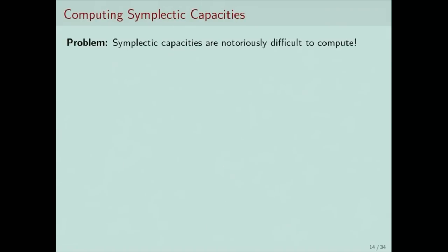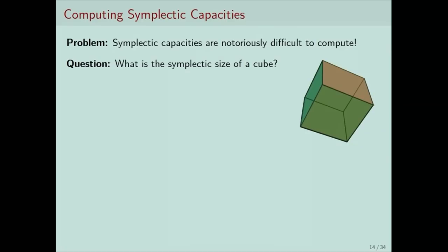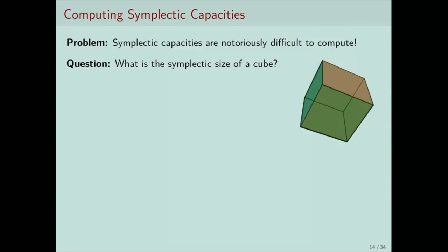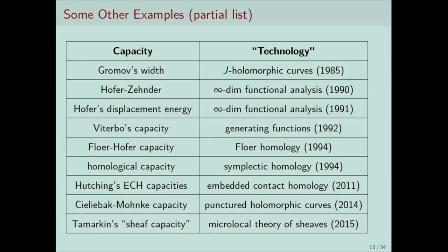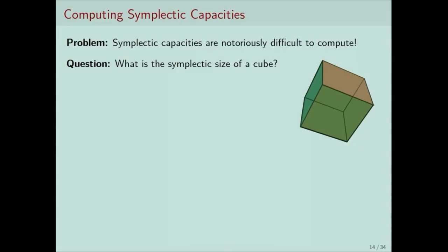We don't know how to compute these capacities. So let me pose a provocative question: what is the symplectic size of a cube? Choose one of these capacities — the Hofer-Zehnder capacity, the Gromov width, whatever your favorite is — take the cube in R^{2n} and tell me what is the symplectic size of the cube. Unfortunately, the short answer is that nobody knows.